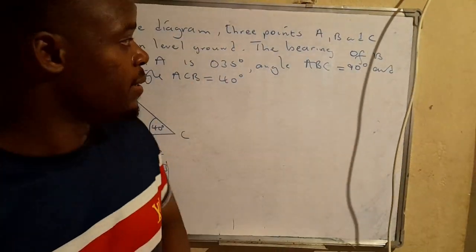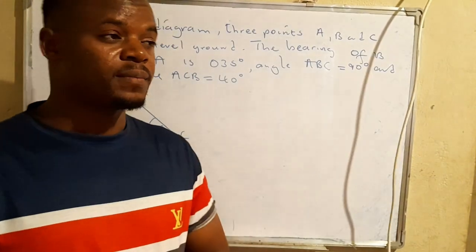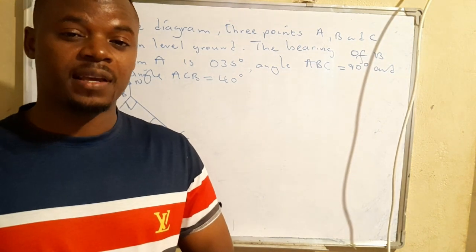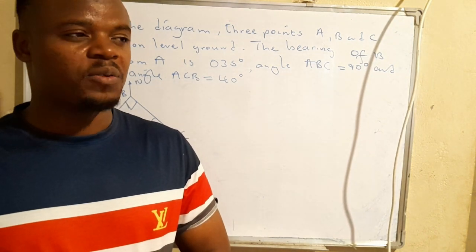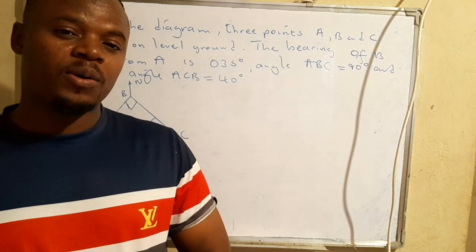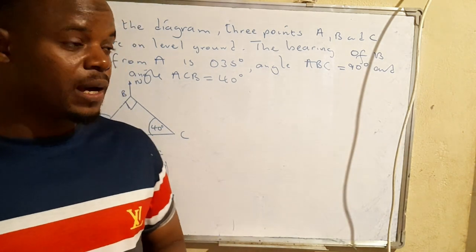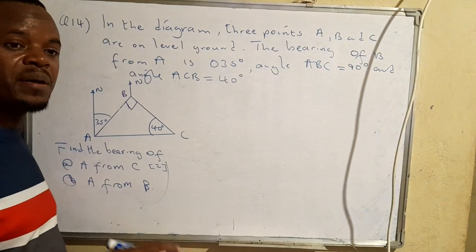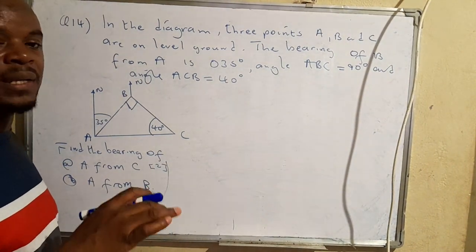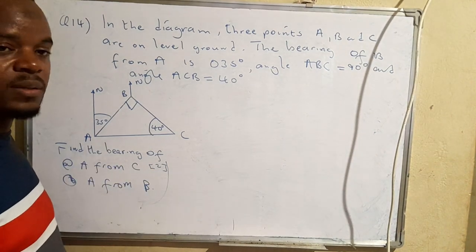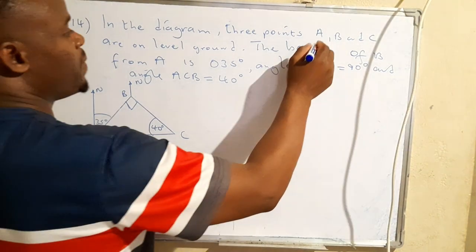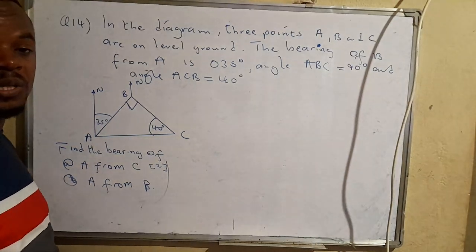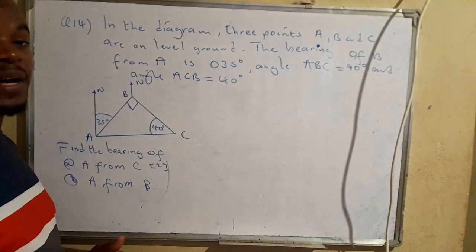This was question 14 of Paper 1, 2023, written by GC candidates. The question is on bearings, and bearings are purely hinged on angles. So if you don't have the foundation for bearings — which is angles — then you'll find it to be a challenge.